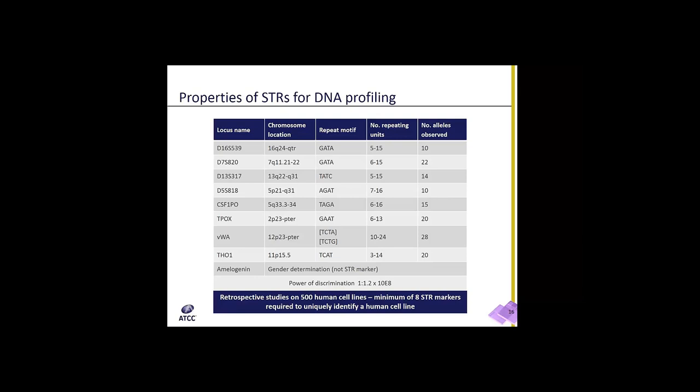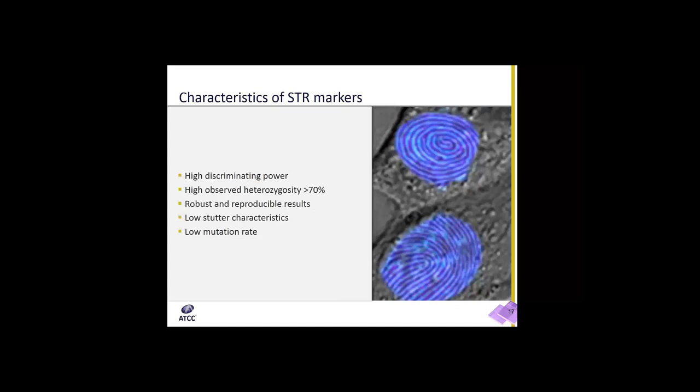In each of the kits available commercially, amelogenin is also included. This is not a short tandem repeat, but is used for gender determination — it can determine whether the cell line was derived from a male or a female. If you were to use all eight STR markers in a multiplex reaction, the power of discrimination, or the probability of two lines having an identical profile, is 1.21 times 10 to the 8th power. Characteristics of STR markers include high discriminating power, high observed heterozygosity, robust and reproducible results, and a low mutation rate.